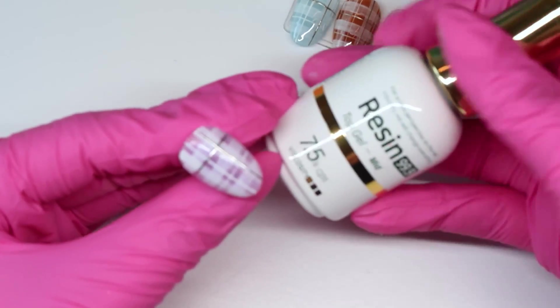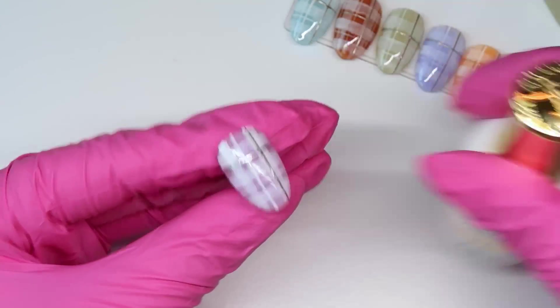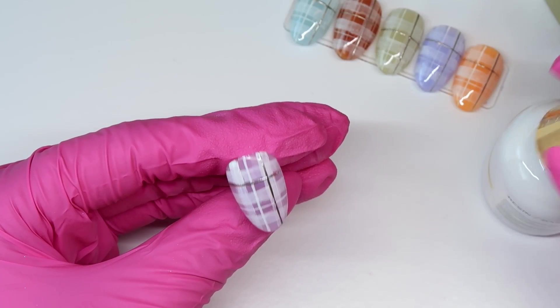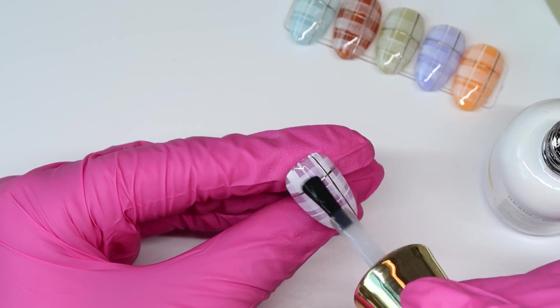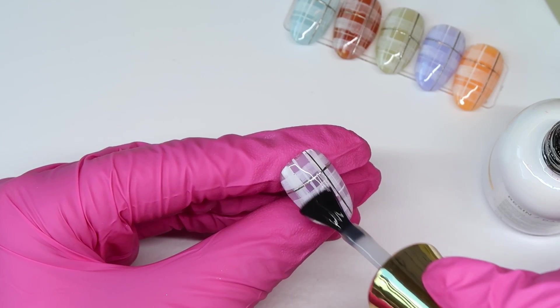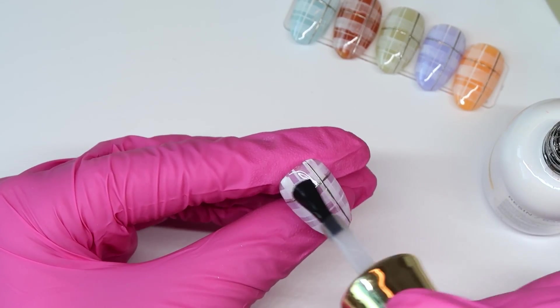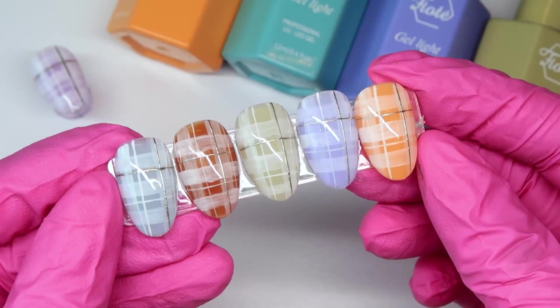So for top coat, I'm going to use the Izemi resin top coat in mid, which is their medium viscosity top coat and it'll cover over all of this nail art really nicely. This is a sticky top coat, so you will have to wipe the tacky layer afterwards, but I just love these top coats. They go on so nice.